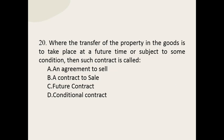Q20: Where the transfer of the property in the goods is to take place at a future time or subject to some condition, then such a contract is called — the options are: an agreement to sale; a contract to sale; a future contract; or a conditional contract. The correct option is: an agreement to sale.